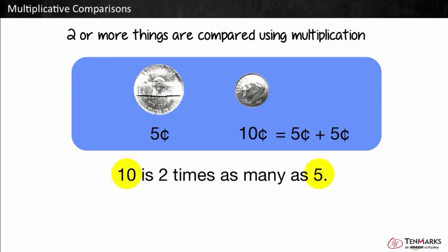Ten and five are the things you are comparing. Two tells you how the sizes are related. It means two times as many as. So we can write ten is two times as many as five, as two times five equals ten.